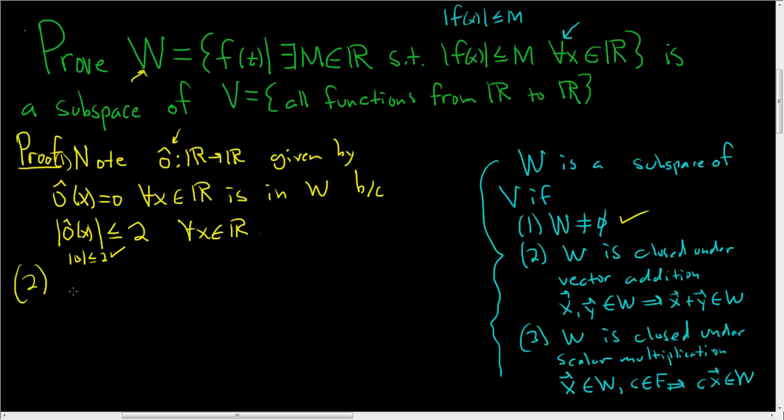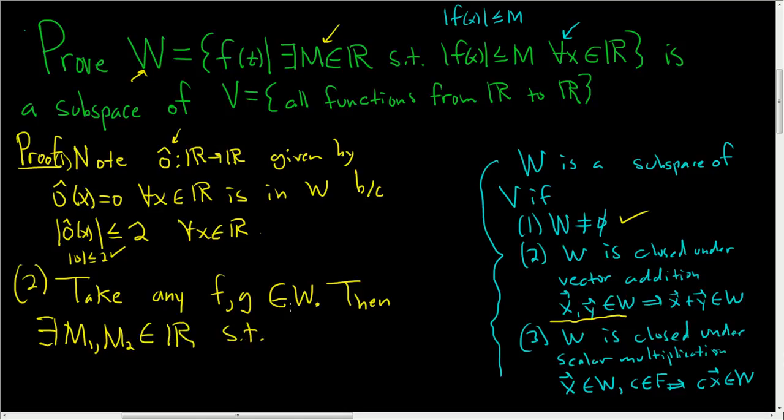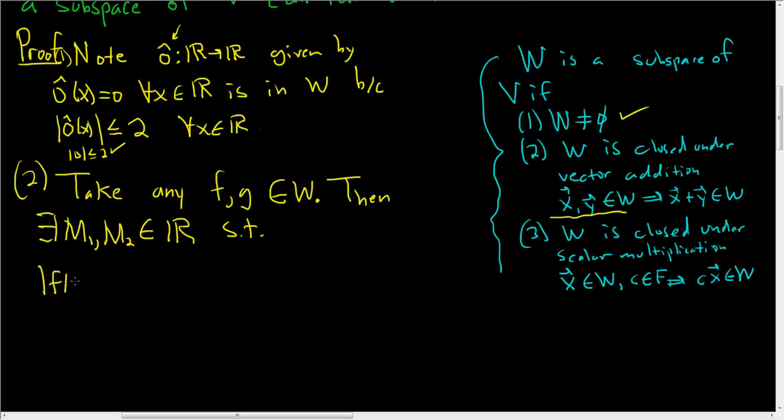Two, we have to show that W is closed under vector addition. So we have to take any two vectors in W, and we have to show the sum is also in W. So take any F and G in W. And now we have to show F plus G is in W. Well, before we do that, maybe let's go ahead and write down what it means for F and G to be in W. So then there exists, well, we're going to have two different M's because we have two functions. So I'm going to use M1 and M2 in R such that the absolute value of F of X is less than or equal to M1 for all X in R.